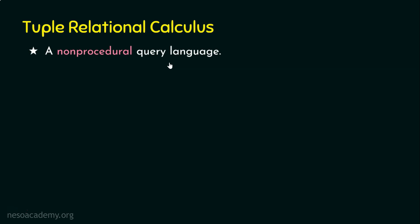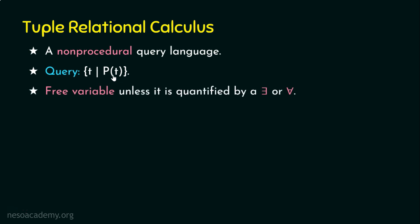The query structure in tuple relational calculus looks like: the set of all tuples t such that the predicate is true for that tuple t. It is important to know about free variables and bounded variables. In tuple relational calculus, a variable is called a free variable unless it is quantified by an existential or universal quantifier.